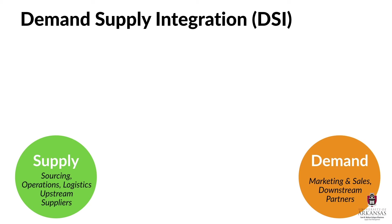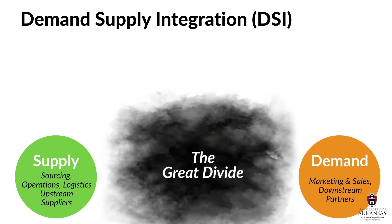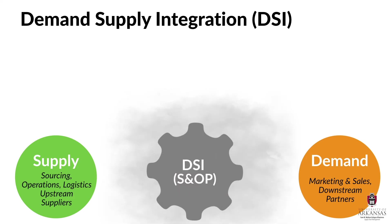In many firms, the demand and supply organizations are not integrated, do not communicate much with each other, and even blame each other for problems. The famous business scholar Peter Drucker referred to this gap as the Great Divide, and he lamented how adversely it affects firm performance. Demand supply integration attempts to bridge the Great Divide by facilitating cross-functional integration through a sales and operations planning process.